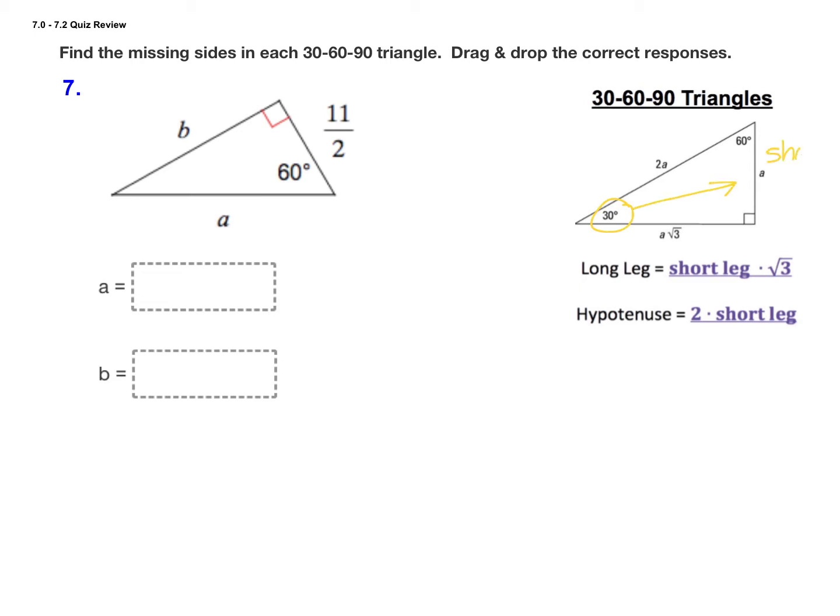Here in this picture, my short leg is a. The longer leg, which is opposite the 60 degree angle, equals the short leg times the square root of 3. The hypotenuse, across from the 90 degree angle, is 2 times the short leg.